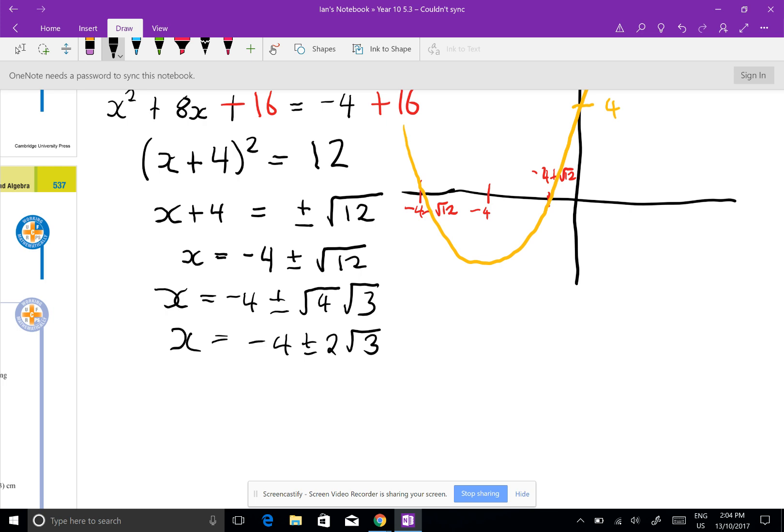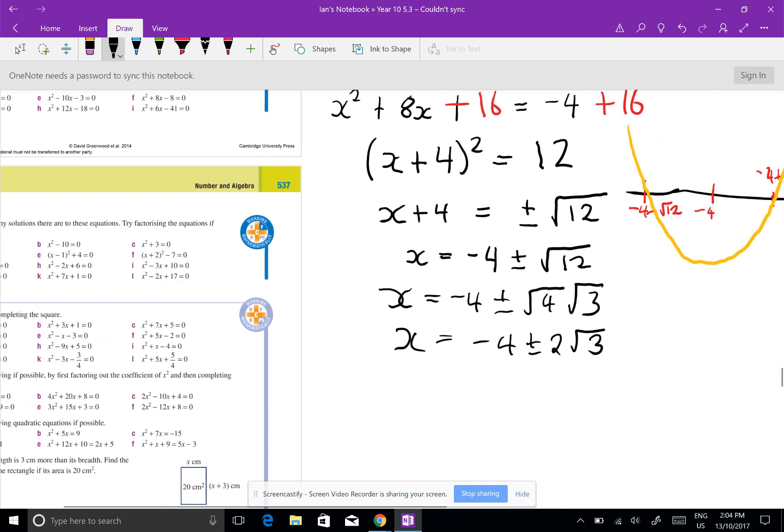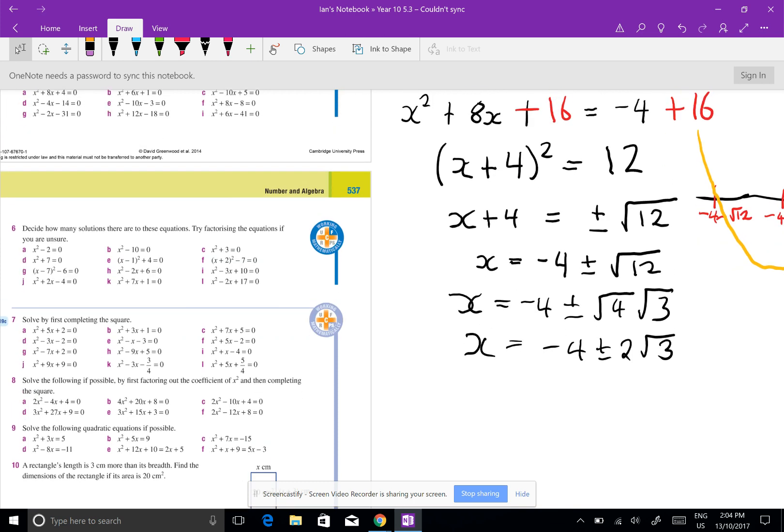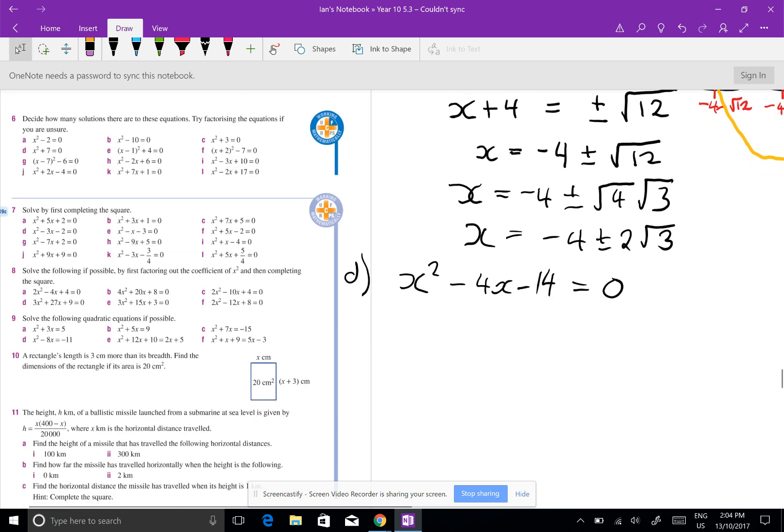So let's have a go at another one, and I won't sketch it this time, I'll just do the answer. So I'm going to do 5d. And 5d is x squared minus 4x minus 14 equals 0. So the first thing you do again, you get rid of that 14. x squared minus 4x, add the 14 over, equals 14.